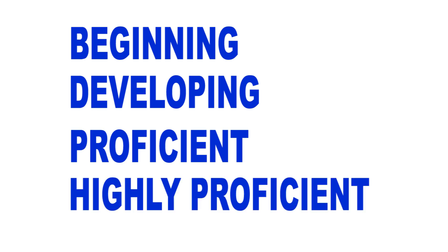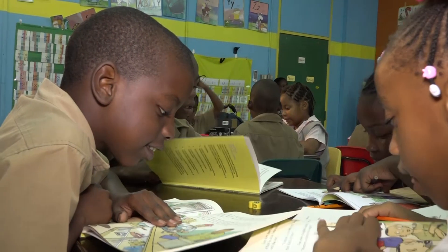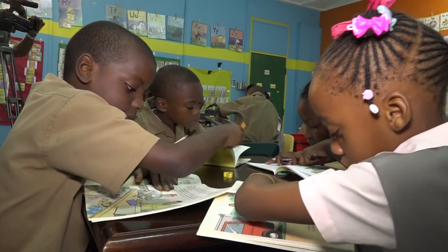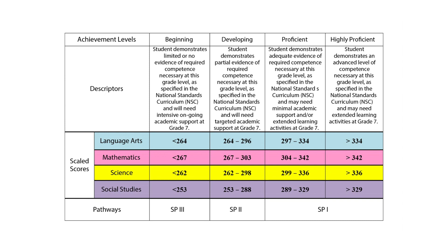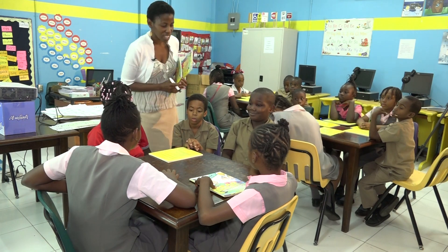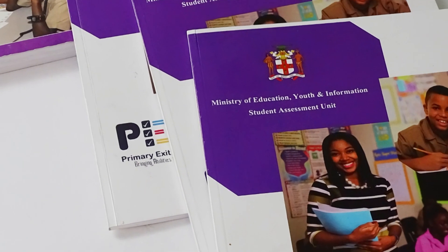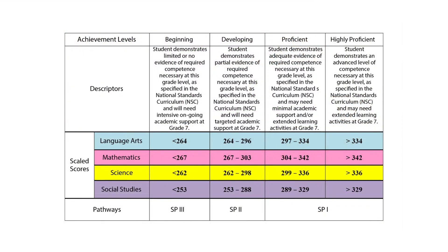The achievement-level descriptors are: beginning, developing, proficient, and highly proficient, which detail how well a student has achieved the required knowledge, skills, and competences as outlined in the NSC for each subject. They also outline the level of support students may need at each level and their overall readiness for Grade 7. The score in each subject should be aligned to the appropriate achievement level in order to identify exactly where on the learning continuum the student is.